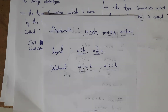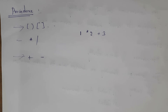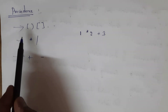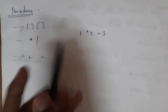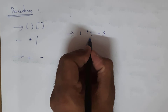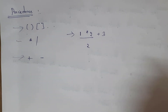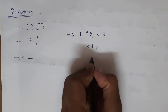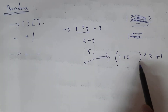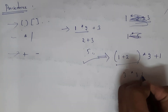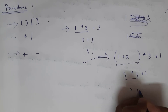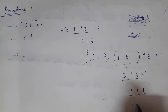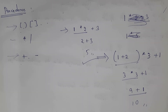Next I will explain precedence and associativity. Precedence means priority — which operator has high priority and which has low priority. First priority is for brackets, second is for multiplication and division, third is for plus and minus. Example: 3 + 1 * 2 — first calculate 1 * 2 = 2, then 2 + 3 = 5. Another example: (1 + 2) * 3 + 1 — first calculate inside brackets: 1 + 2 = 3, then multiply 3 * 3 = 9, then 9 + 1 = 10. Based on precedence, we perform calculations accordingly.